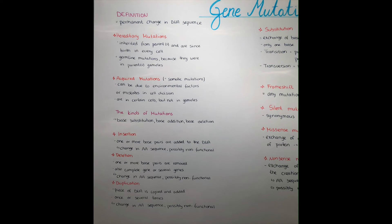The next kind of mutation is deletion, where one or more base pairs are removed from the sequence. It's also possible that complete genes or several genes are removed depending on how large the amount of sequence that is affected. This of course also changes the amino acid sequence and the protein might be possibly non-functional.